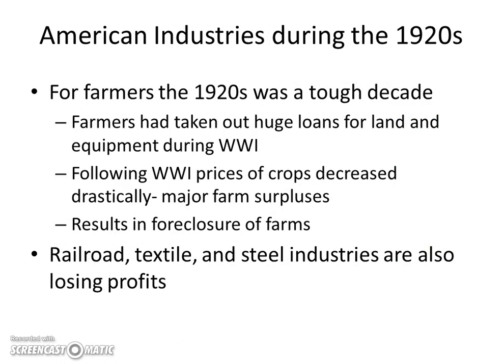So what situation were American industries in during the 1920s? For farmers, the 1920s was actually a really tough decade. Farmers had taken out huge loans for land and equipment during World War I in order to meet the demands of soldiers overseas. Following World War I, the demand stopped but the production continued. Prices then crashed, and you ended up with major farm surpluses — wheat sitting in train depots, rotting. The result was a lot of foreclosures of family farms.